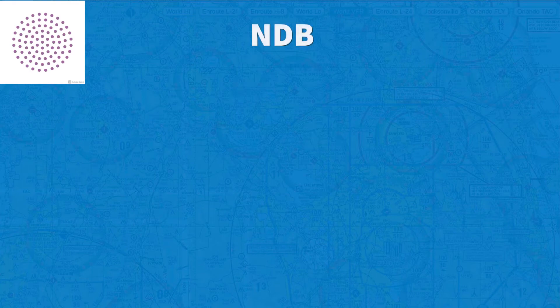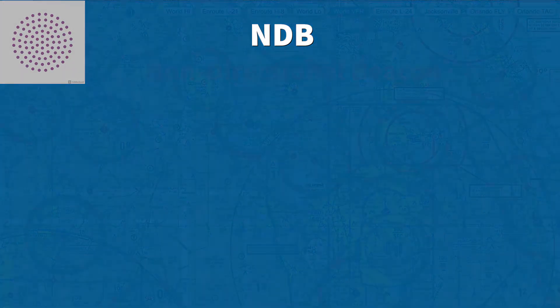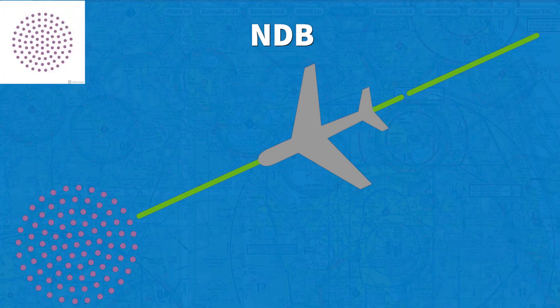Another type of navaid that is quite old but is still being used is called the NDB, or non-directional beacon. This one works just like a VOR but you can't choose a specific radial to fly to. With this station, you only know where the station is — you cannot choose a specific radial in which to fly to it. That's why it is called a non-directional beacon.